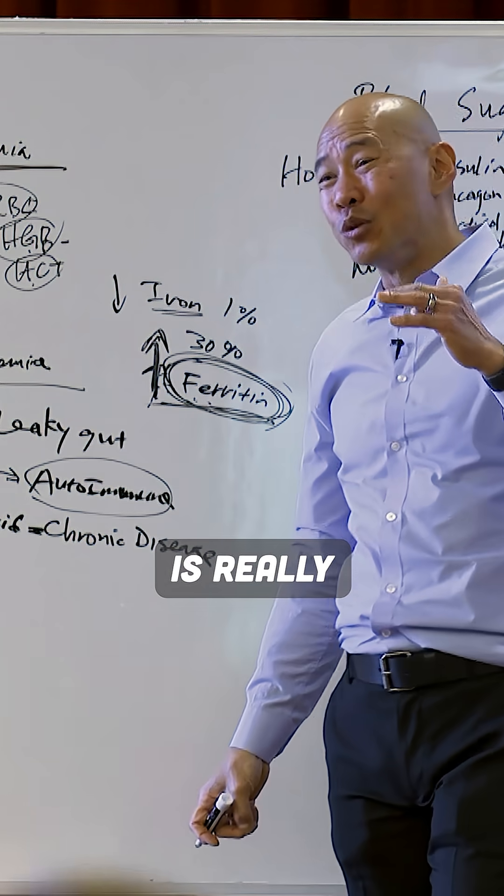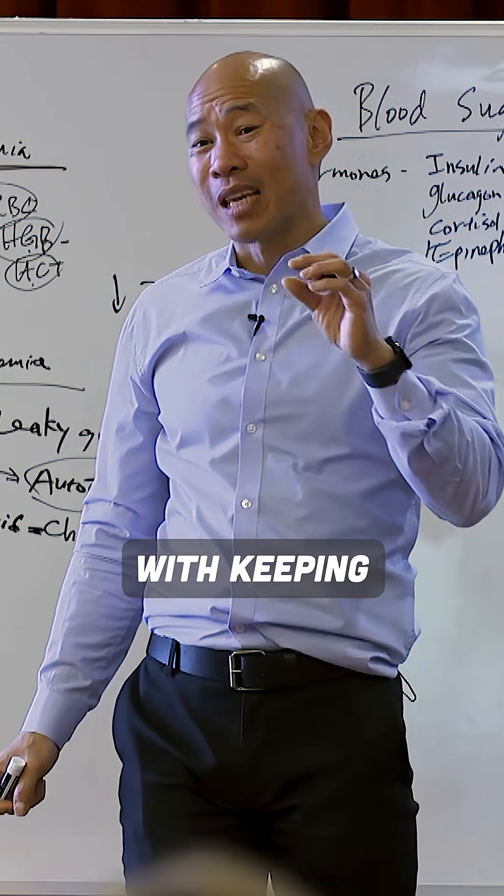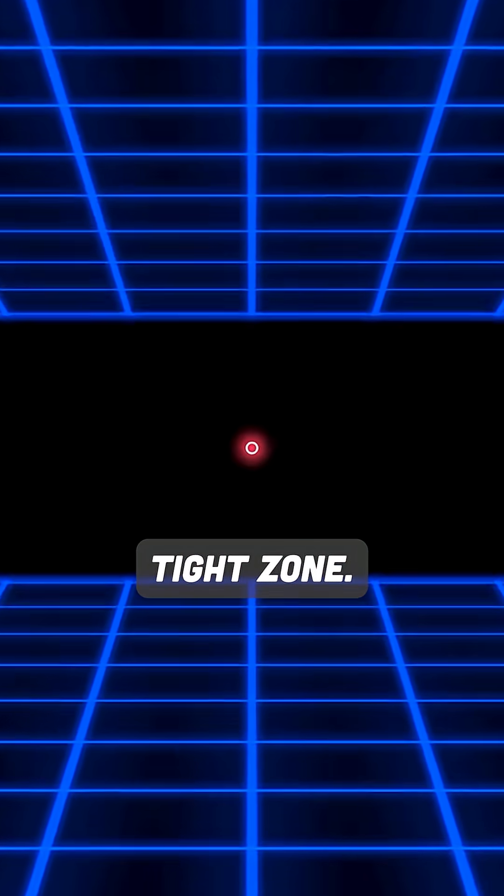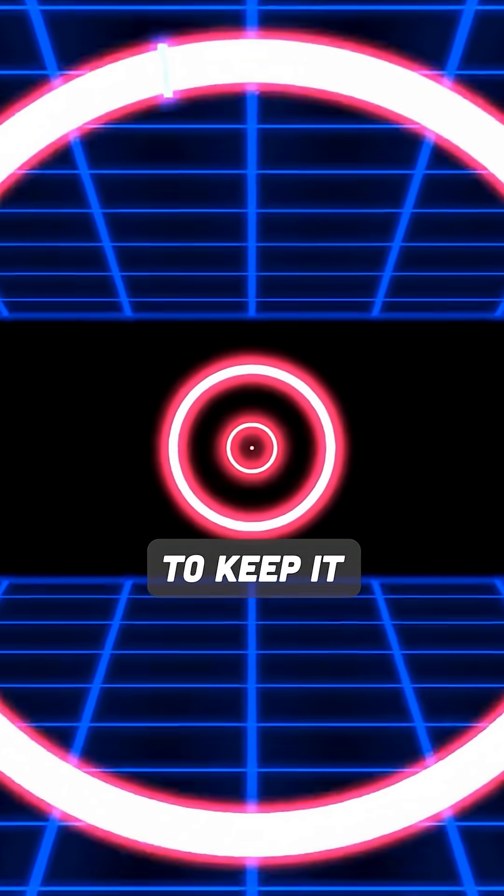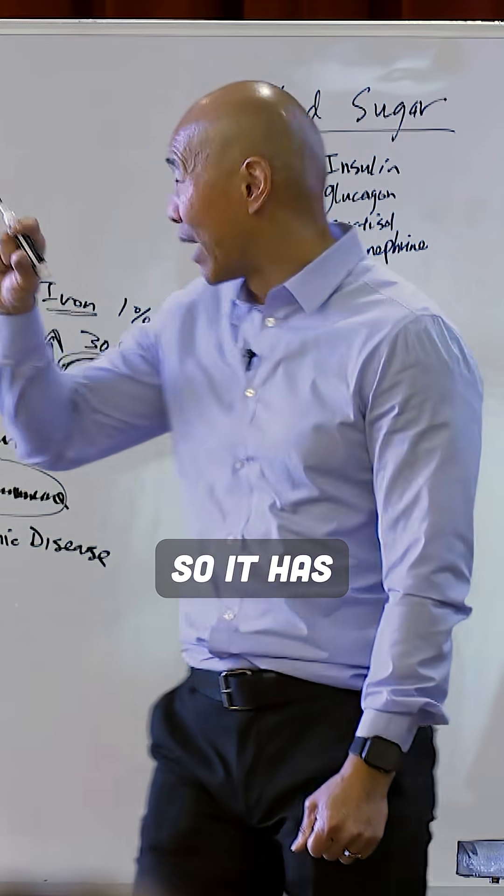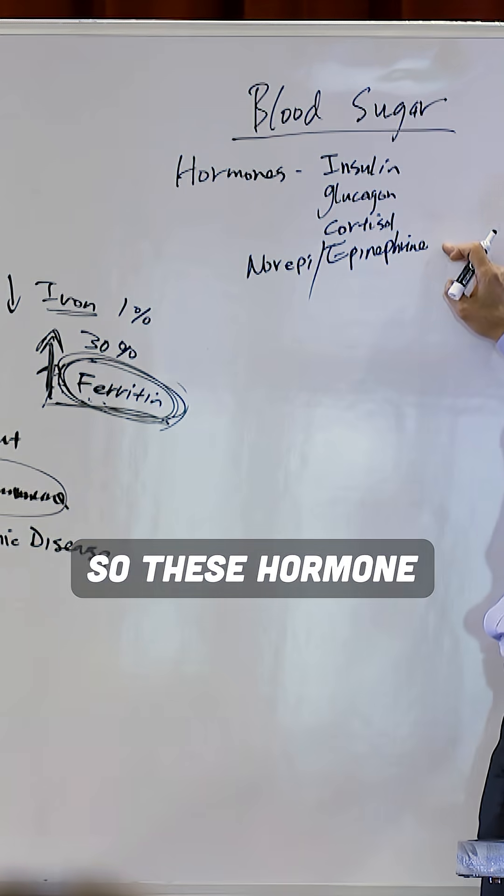Just so you know, your body is really obsessed with keeping your blood sugar in a very tight zone. It doesn't like many fluctuations, and your body does everything it can to keep it really tight. So it has redundant backup mechanisms through these hormones to do that.